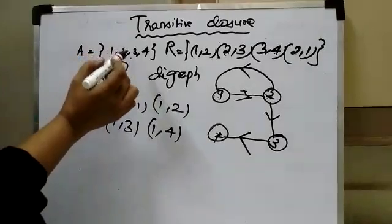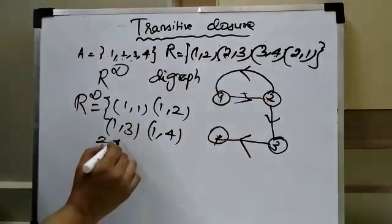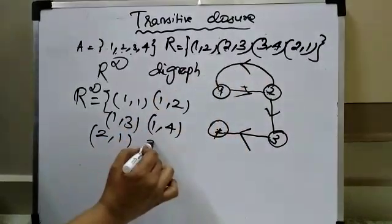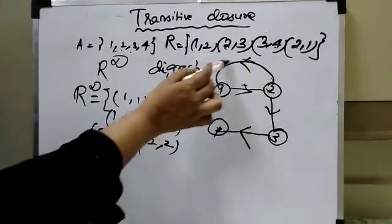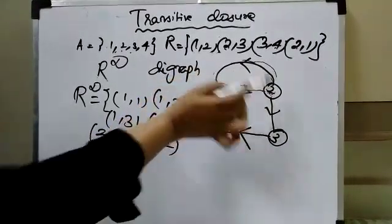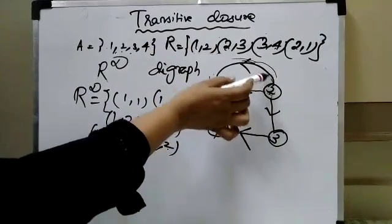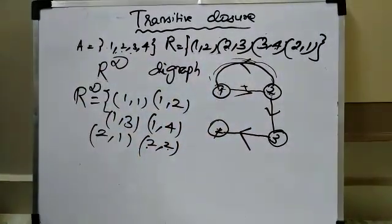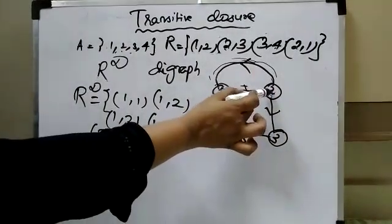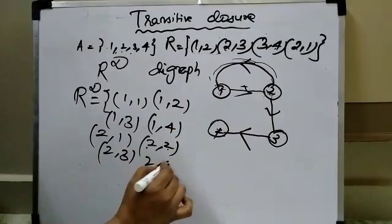Next, take vertex 2. From 2, is it possible to reach 1? Yes, it is possible. From 2, can I reach 2 again? I can travel from 2 to 1 and back to 2, so (2, 2) is possible. (2, 1) is also possible. What about (2, 3)? Yes, it is possible directly. And (2, 4)? There is no direct edge connecting 2 and 4, but you can travel via 3, so (2, 4) is also possible.